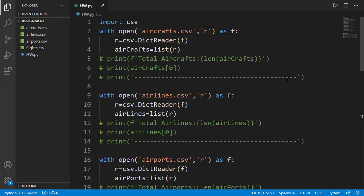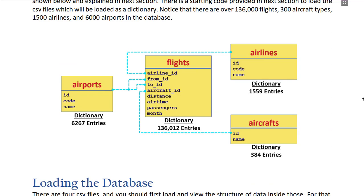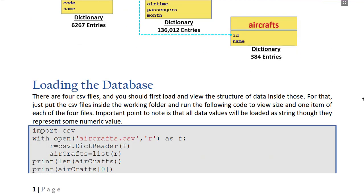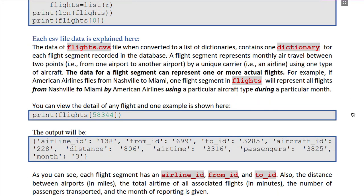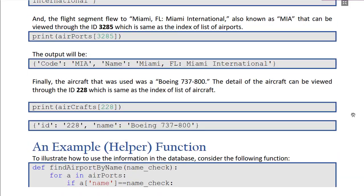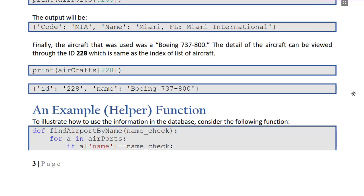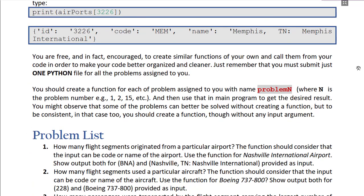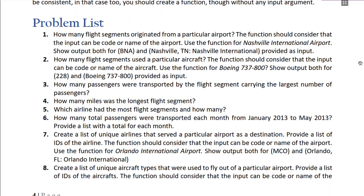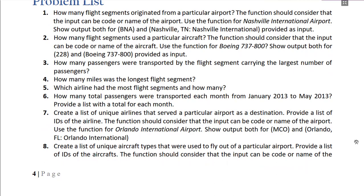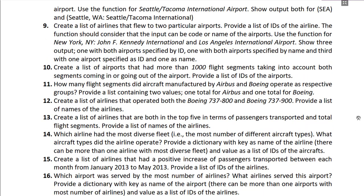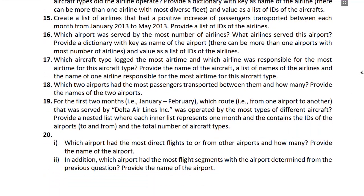Now let's talk about the tasks to be performed. For that, we have a PDF. The database is explained there. The starting code for loading the database is provided. There is one example function to search the airport from the database by the name of the airport. And then finally is the list of problems you have to do. There are total 20 problems from this database. Each of you will be assigned 5 problems from this list, but I will suggest that you should try the maximum problems from this list — ideally all of them. So do these problems and let me know if you have any query. Thanks for watching.